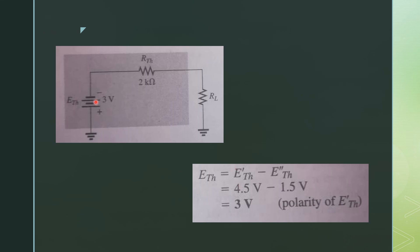This is the equivalent Thevenin circuit for the shaded region. Place the load resistor to its original position between A and B. That's all for today's lecture. If you have any questions, comment in the comment bar. Thank you very much.